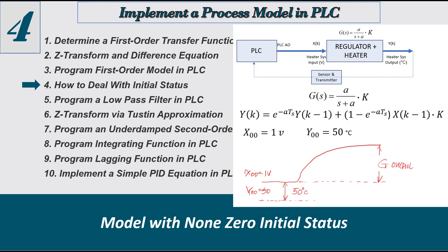In this video I'd like to discuss how we can program a model in the PLC when the model has a non-zero initial status. The example I'll use is a temperature system where the input of the heater system was 1 watt and based on that, the output temperature was 50 degrees Celsius. This 1 watt input and 50 Celsius degree output is the initial status of this model.